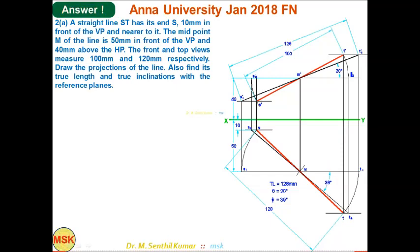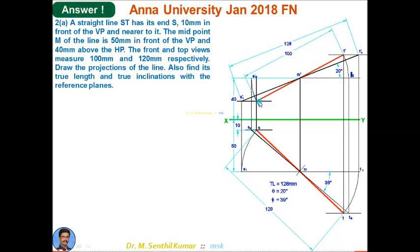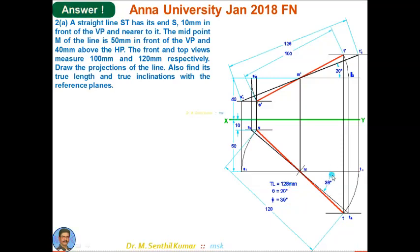To find the true length and inclination: rotate the ST line in the top view to make it parallel to XY, giving S1T1. Draw projectors from S1 and T1, then join S1-dash and T1-dash — that is the preliminary front view showing true length and true angle θ. Measure the true length: it is 128 mm, and θ = 20 degrees. Similarly, in the front view side, rotate to make it parallel to XY, yielding S2-dash T2-dash as the preliminary top view showing true length again as 128 mm and angle φ = 39 degrees.